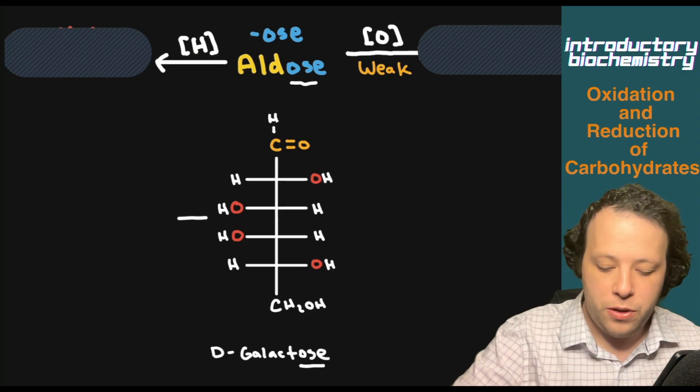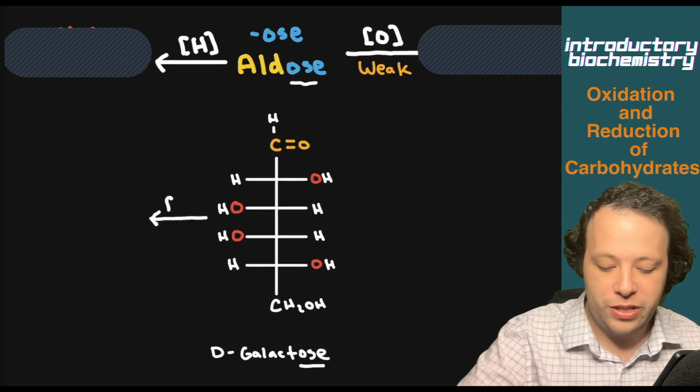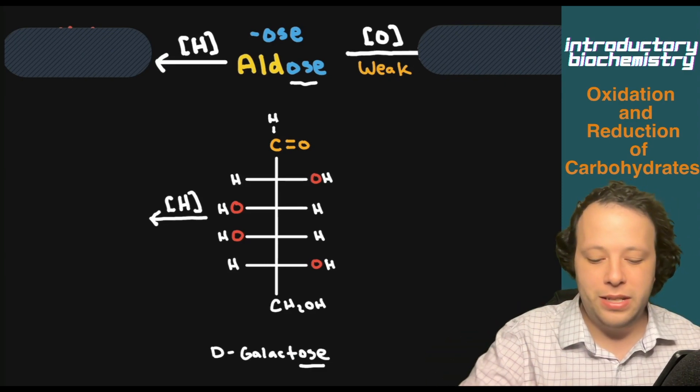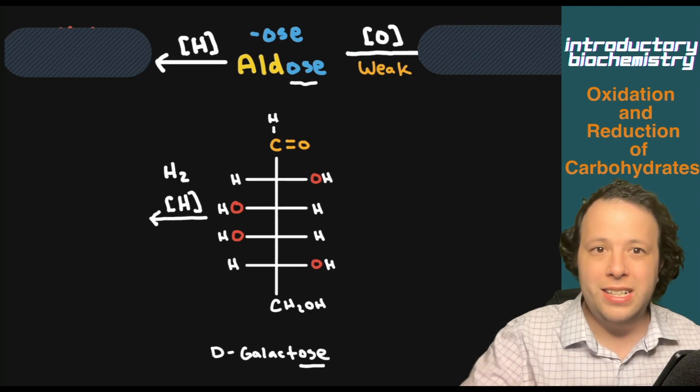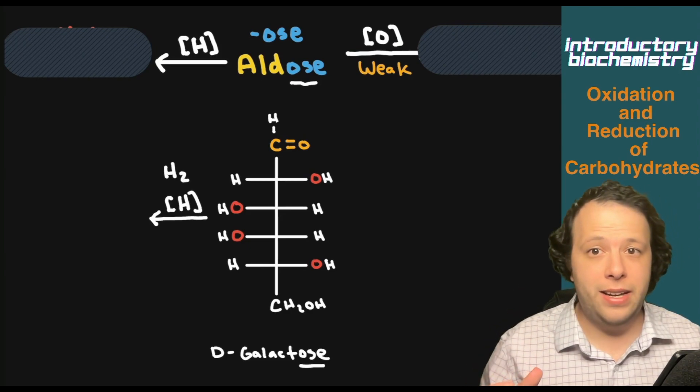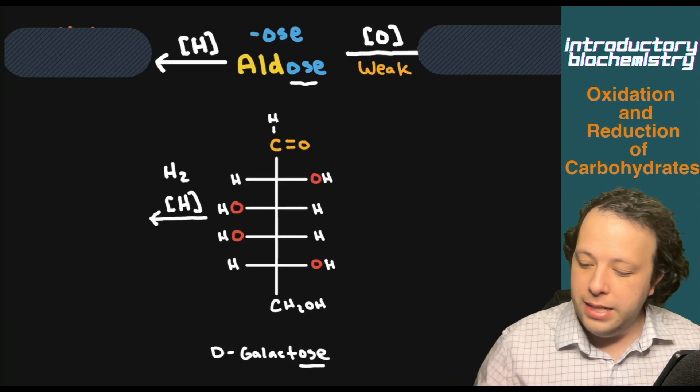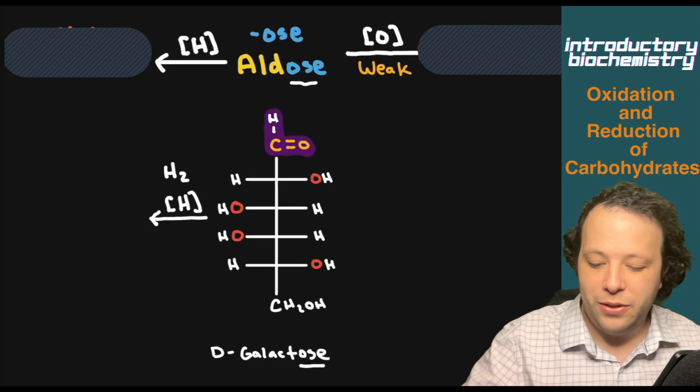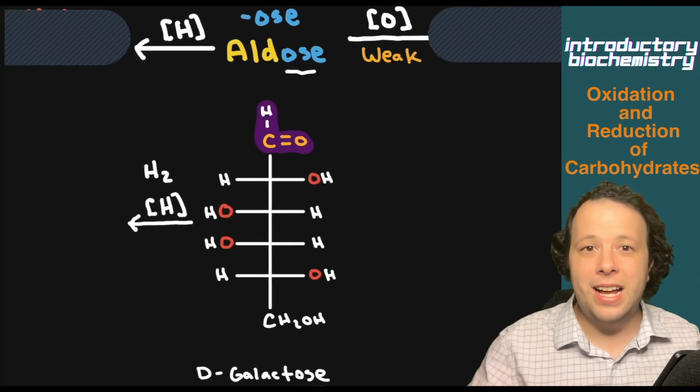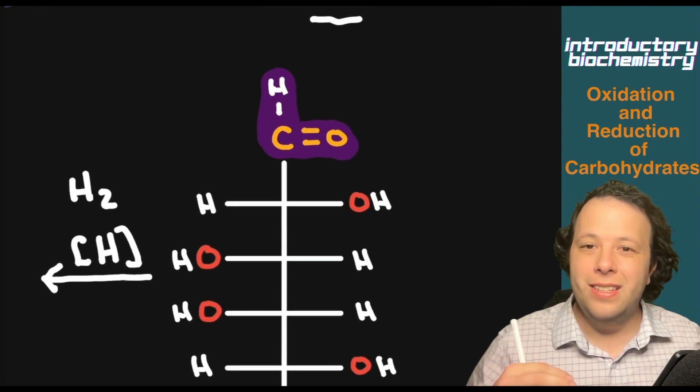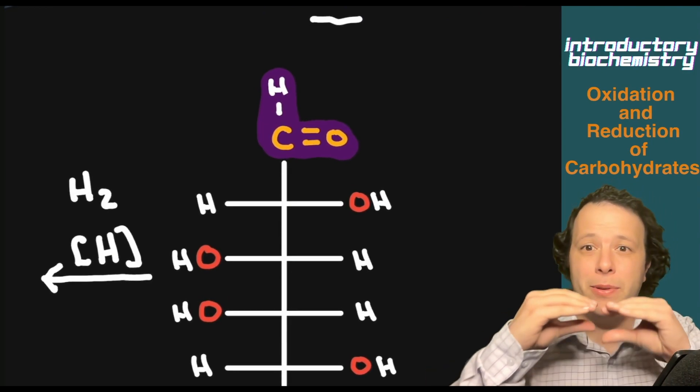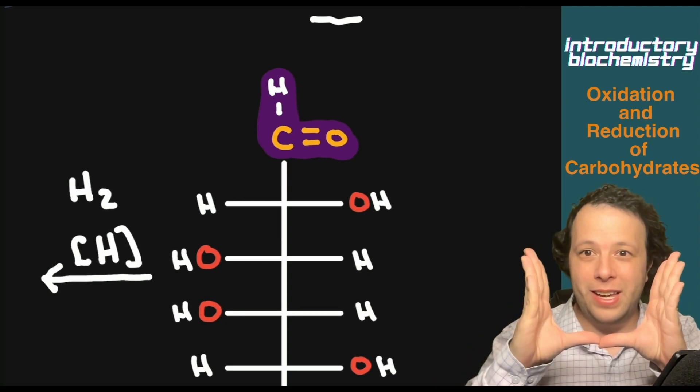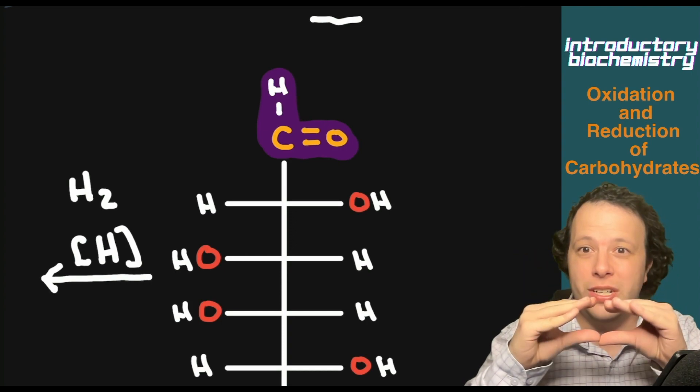If I were to put this through a reduction reaction, usually it's represented by an H in brackets or maybe with H2 being added. The idea is that the only thing changing is the functional groups. What sets an aldose apart is that it has an aldehyde at the very top. If you think of a double bond as a cabinet, if I open up the doors of the cabinet, we're going to be adding hydrogen to that part of the double bond.